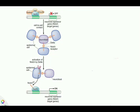In this video we are going to talk about a regulatory switch — the Notch/Suppressor of Hairless regulatory switch — which decides the fate of neurogenic cells that can either become neuroblasts or epidermal cells in the Drosophila embryo.